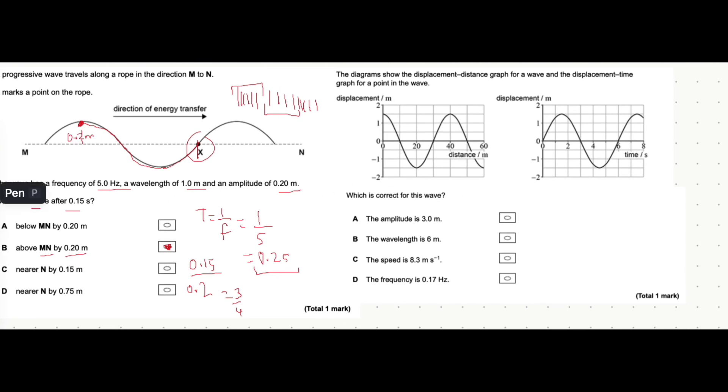Let's now move on to this question on the right. The diagrams show displacement distance graph for a wave and the displacement time graph. What is correct for the wave?